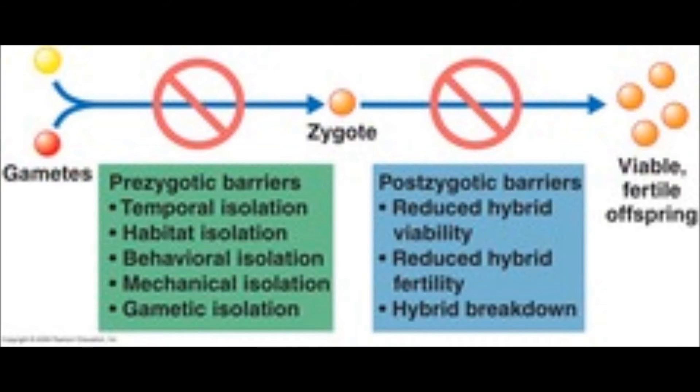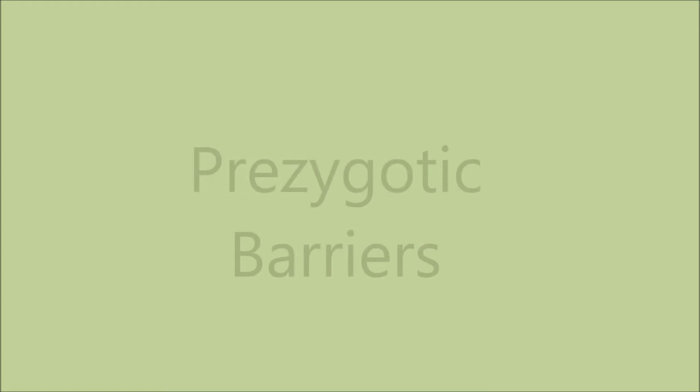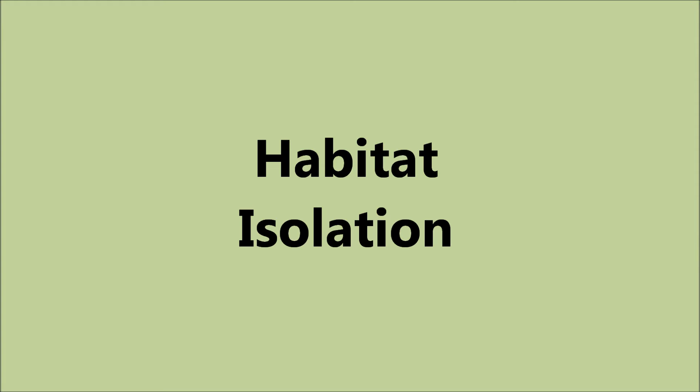There are two types of barriers: the barrier before fertilization, which is called the prezygotic barrier, and the barrier after fertilization, which is called the postzygotic barrier. Now let's take a look at the prezygotic barriers that affect the species.